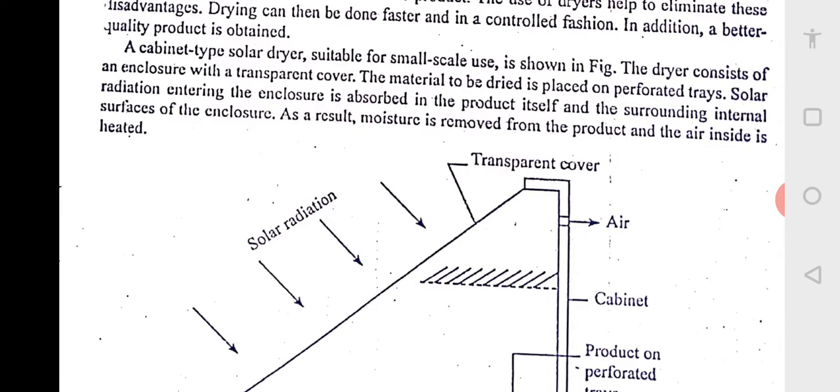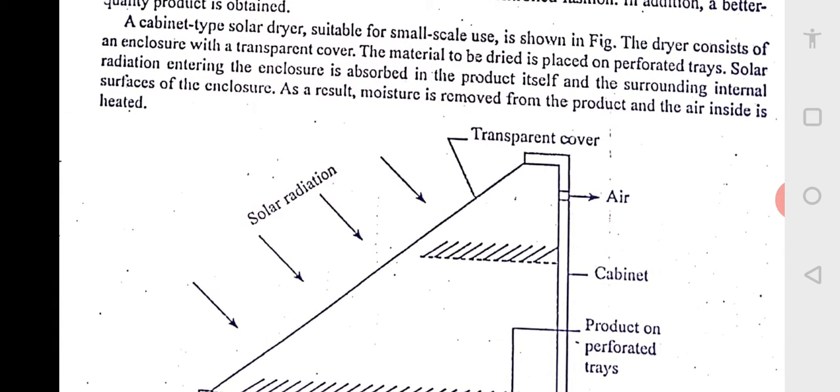You might have seen chillies and all, even onions, they keep like weeks together. But here it is done at a faster pace. It is simple like a solar air heater only, what you have seen, air heater. In that solar air heater we are only heating the air. Here, the heated air is used to dry off the agricultural produce.